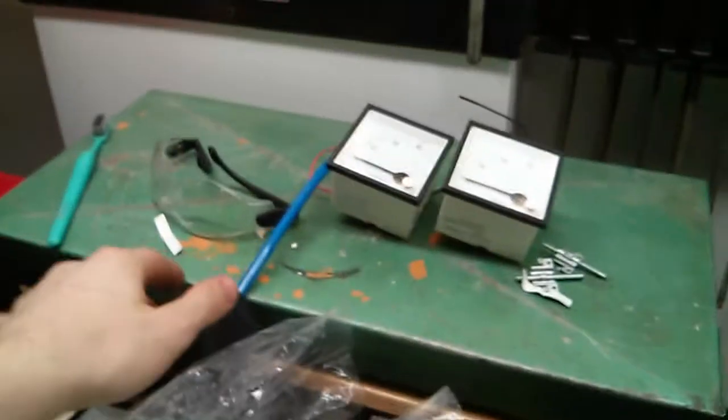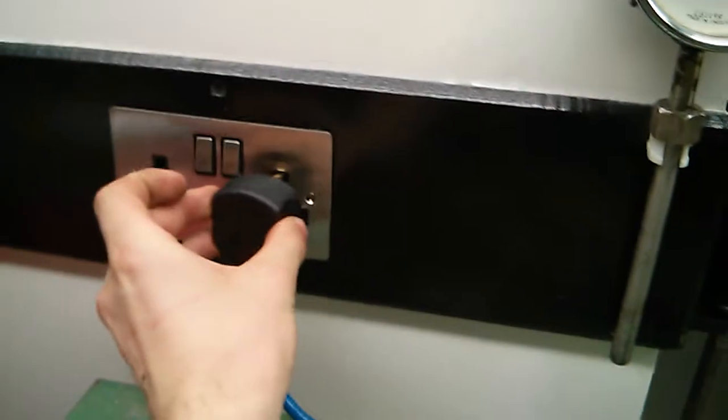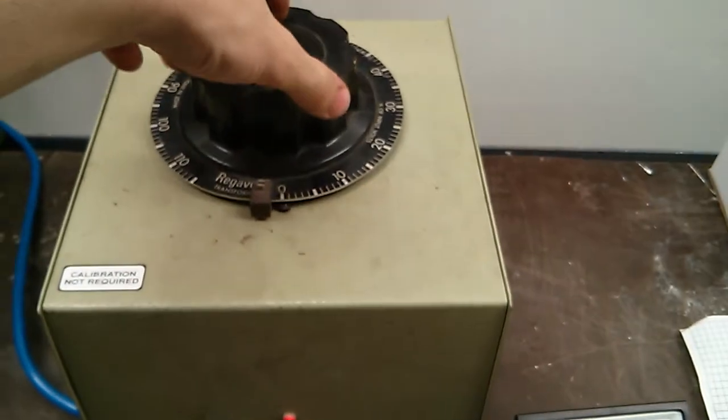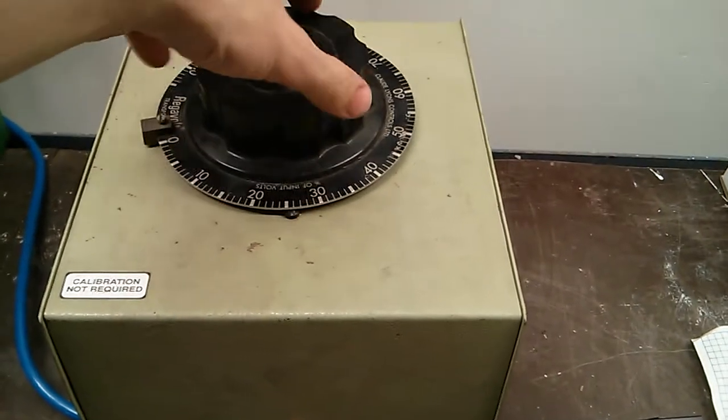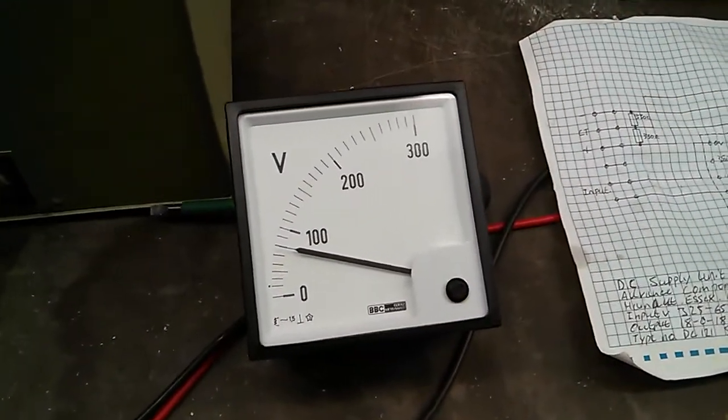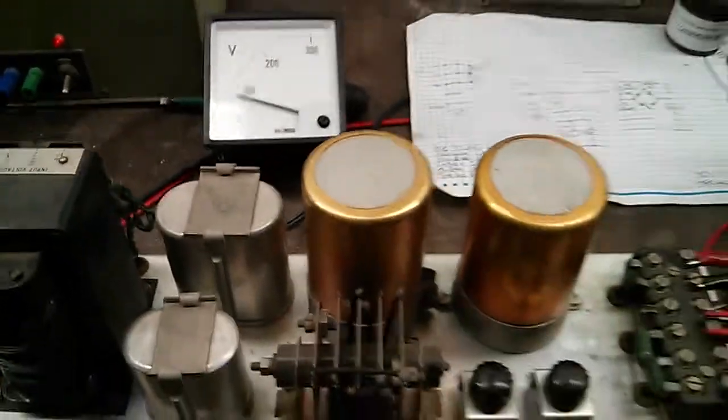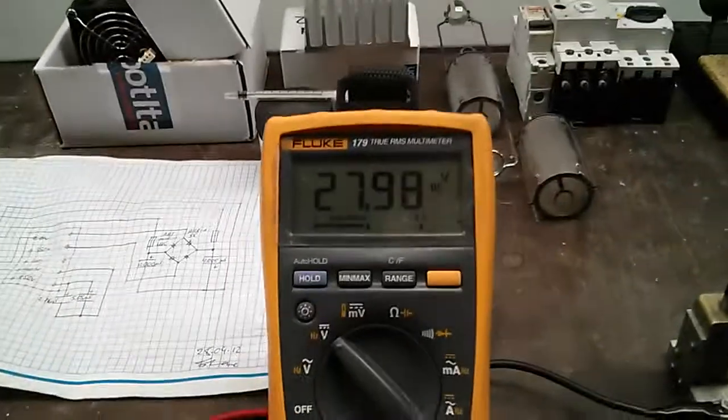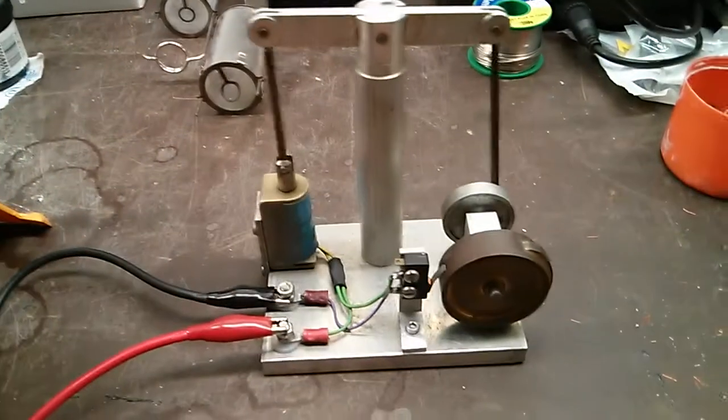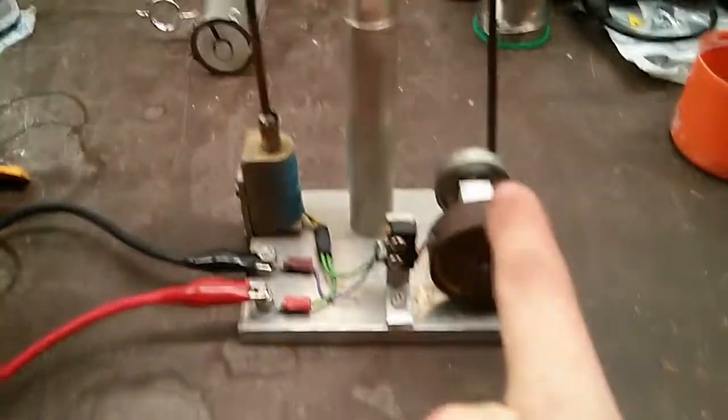So plug it in. Switch them on. Switch the variac on. Give it about 30% input, so that's about 80 volts in. About 28 volts out at the moment. So we'll hook it up to the little solenoid engine here.